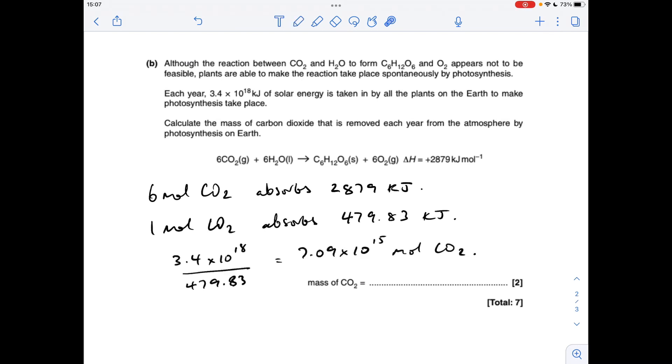So then if we factor in the annual solar energy and divide it by that amount of energy per mole of CO2, we can see that that many moles of carbon dioxide must be involved annually. And then all we need to do now is multiply that by the MR to find out the mass of CO2, which comes out at 3.12 times 10 to the 17 grams.